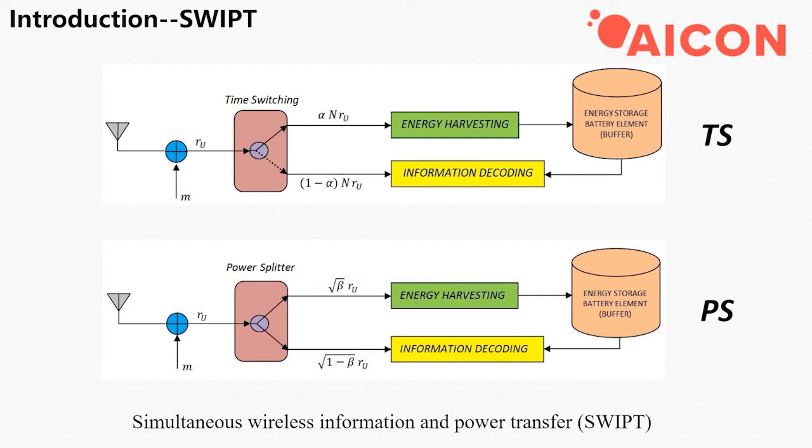Simultaneous wireless information and power transfer is a new type of wireless network that has received extensive attention recently.